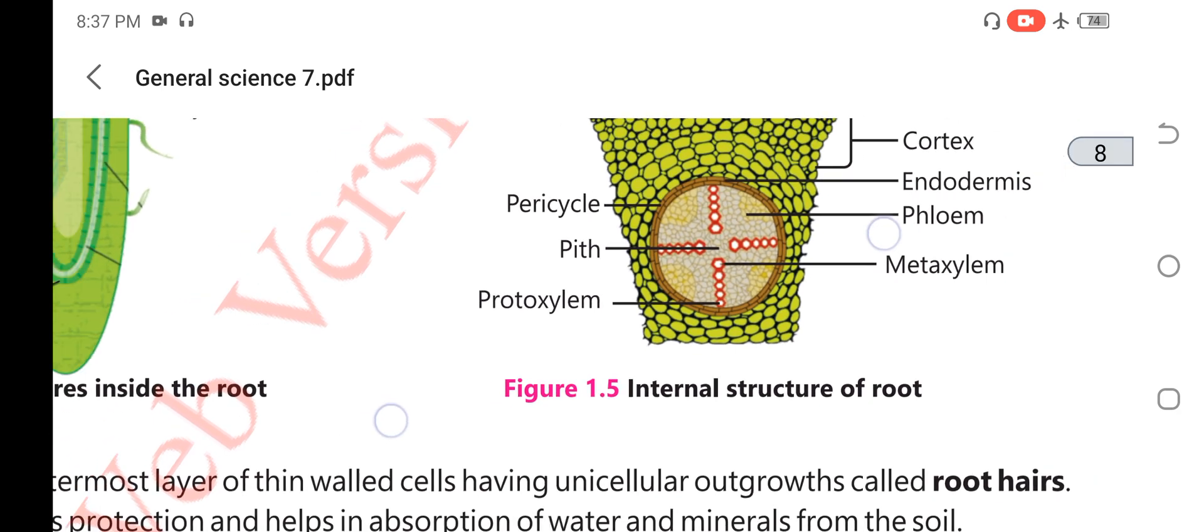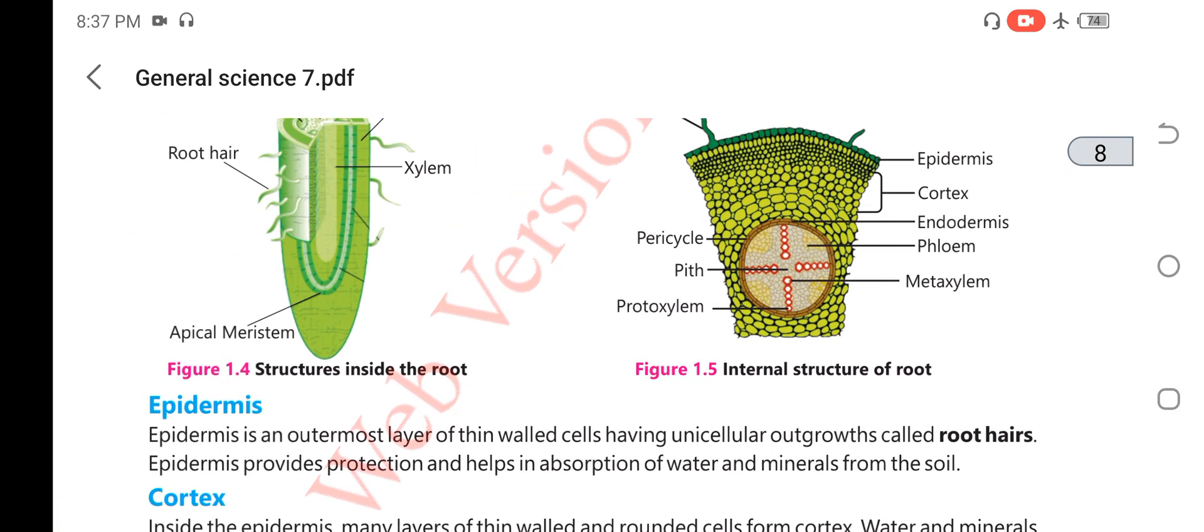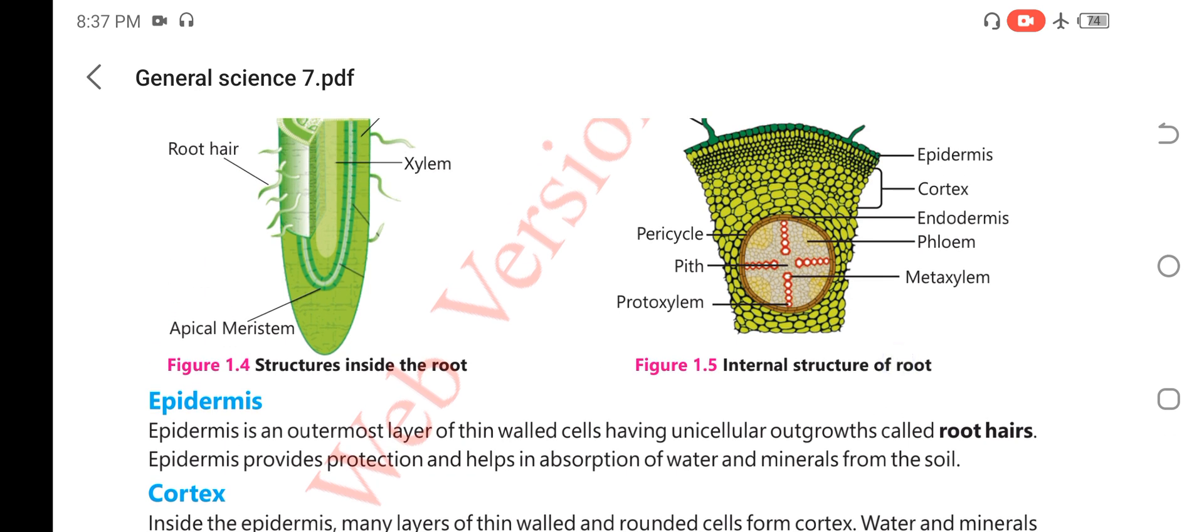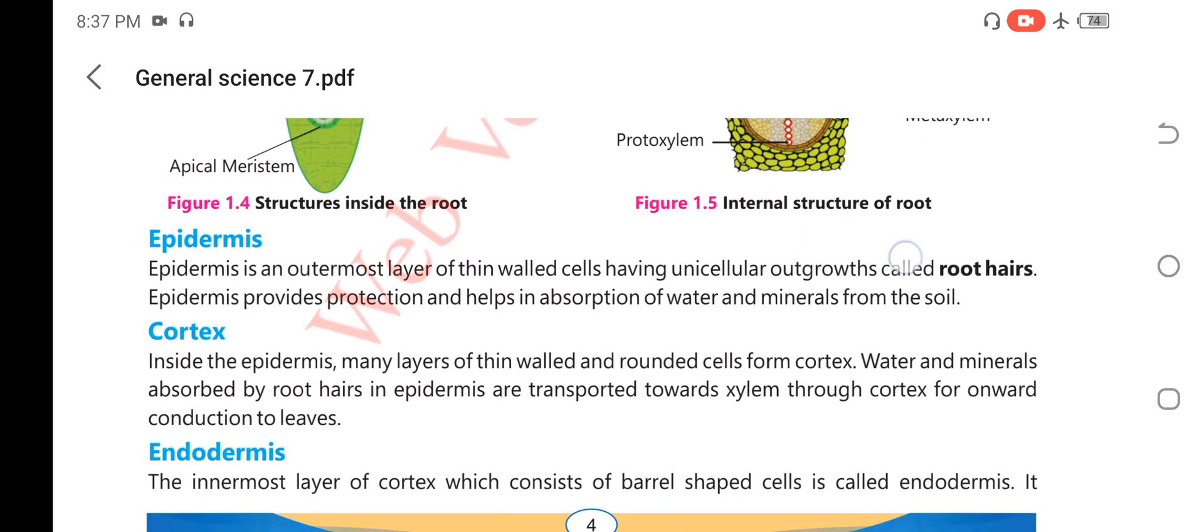Now we will discuss the structure one by one, the description of each part. First is the epidermis that is the outermost layer of thin-walled cells. These thin-walled cells form the outermost layer which has root hairs that absorb water. Epidermis provides protection and helps in absorption of water and minerals from the soil. Next is the cortex.